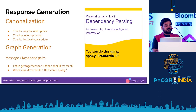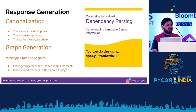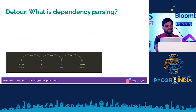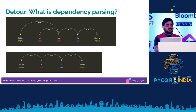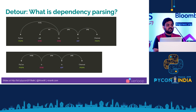The tool used to build the canonization component and the graph generation component comes from linguistics — what we call dependency parsing. It's an old idea, something we do internally at Verloop using spaCy. We can also do this using Stanford NLP. The basic idea is that we break down a sentence — for instance, 'PyCon will be in Chennai' — into subject, auxiliary verb, root verb, preposition, and object. This is the core information: part-of-speech tags and how they relate to and depend on each other, which is what we call dependency parsing.